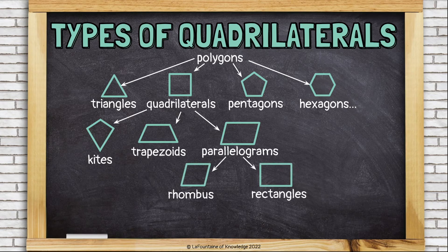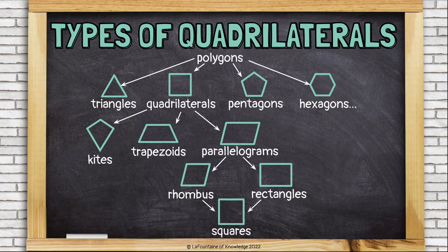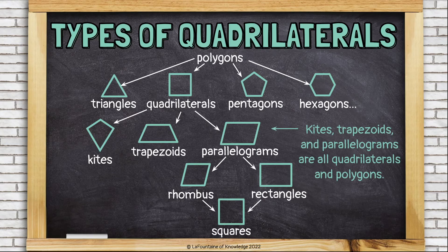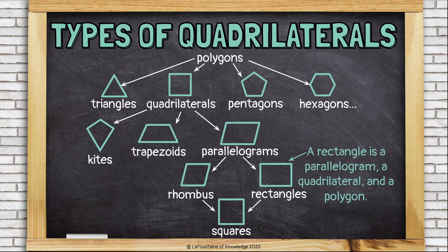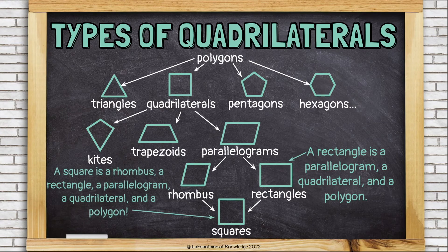Parallelograms can be broken down further — called either a rhombus or a rectangle. It's a rhombus if its sides are congruent, and it's a rectangle if it has right angles. If it has both congruent sides and right angles, it's called a square. Kites, trapezoids, and parallelograms are all quadrilaterals and all polygons. A rhombus is a parallelogram, a quadrilateral, and a polygon. A rectangle is a parallelogram, a quadrilateral, and a polygon. And a square? A square is a rhombus, a rectangle, a parallelogram, a quadrilateral, and a polygon.